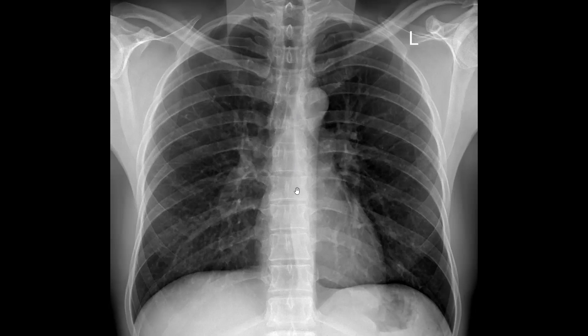Another line you want to identify is the anterior junction line. You may not see it on every chest X-ray, but it's good to look for it on every chest X-ray. The anterior junction line is this line here, and it's important especially if you have any kind of volume loss in the lung — this line will shift in the setting of atelectasis. It's a helpful finding to make.